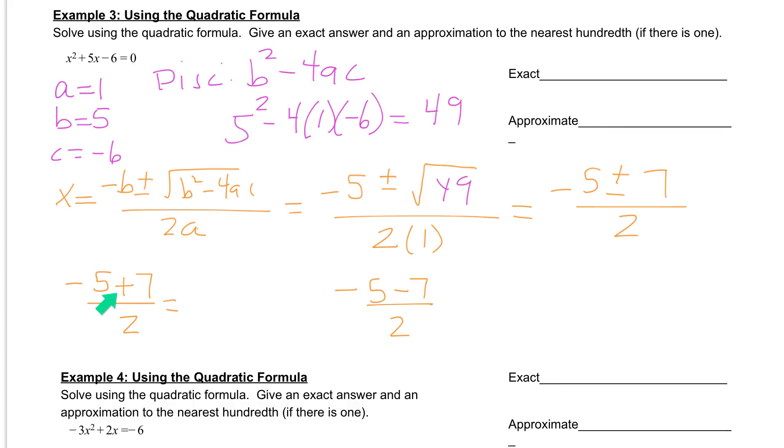For the first one here, negative 5 plus 7 is 2. And if we divide that by 2, we get an answer of 1. Here, negative 5 minus 7 is negative 12. If we divide that by 2, we get an answer of negative 6.